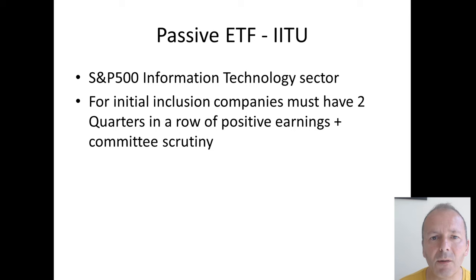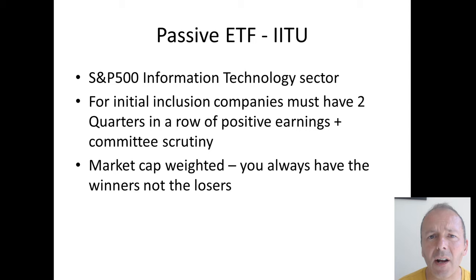If we look first of all at a passive ETF, it's IITU — the S&P 500 information technology sector. The great thing about the S&P 500 is that for inclusion, companies must have two quarters in a row of positive earnings and pass some committee scrutiny as to how they got those earnings. For example, Tesla was initially denied entry because it was getting profits from trading carbon credits rather than actually making cars. The ETF will be market cap weighted so you'll always have the winners and not the losers.